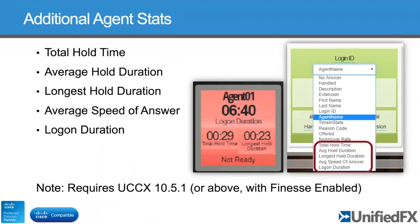The next set of stats pulled in via the extra Finesse data feed includes five extra parameters for agents: total hold time, average and longest hold duration, average speed of answer, and logon duration. From a supervisor's perspective, that gives more visibility into the activity at an individual agent level. The right-hand screenshot shows the admin interface dropdown list, and those five extra ones have been added at the bottom so you can choose any of them.